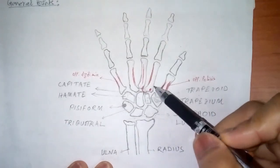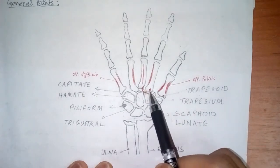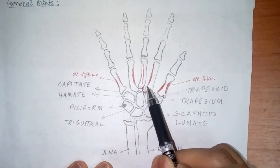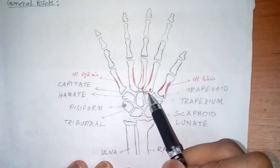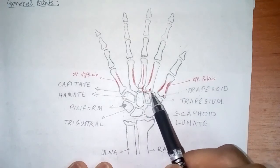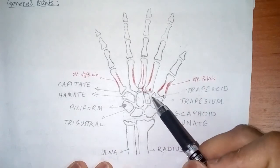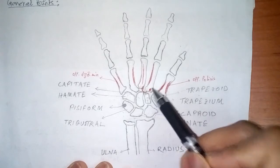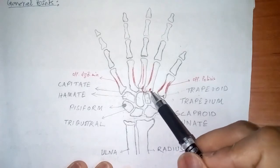As for the second metacarpal bone, there is a groove at the base, and it has two edges — one medial and one lateral. The medial part is larger than the lateral side. This is the distinct characteristic of the second metacarpal bone. As for muscle attachments, the flexor carpi radialis is inserted on a tubercle on the palmar surface at the base.